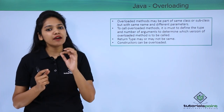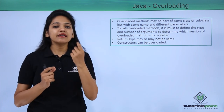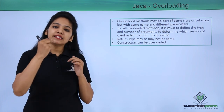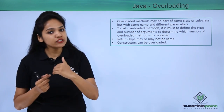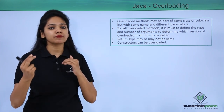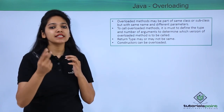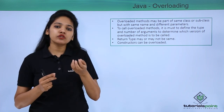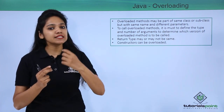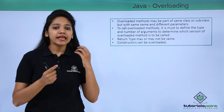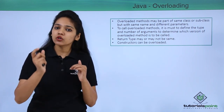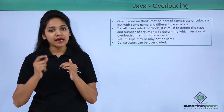For example, if you have declared a method called 'addition' with two integer variables a and b, then the next 'addition' method should pass at least three variables or something different. Similarly, for a 'display' method with one string variable, the next 'display' method cannot have only a string variable — it should have a combination of other arguments as well.